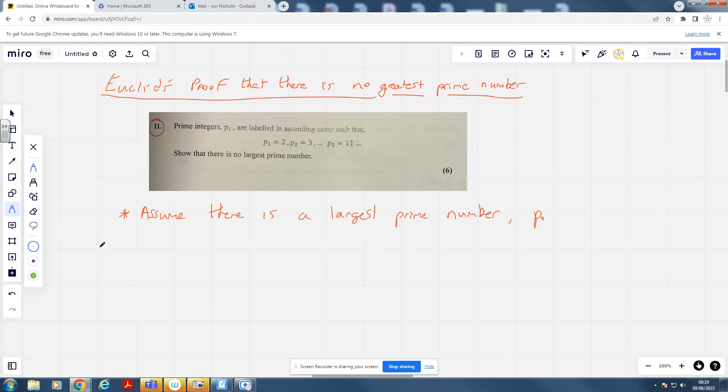And now, this was Euclid's great trick. He said consider a new number. Let's call this our number X. X is going to be equal to P1 times P2 times P3 times P4 times P5 times P6, all the way up to our largest number P_n, plus 1. So we're creating this new number by multiplying all of the primes together from the very first one, 2, all the way up to our largest prime number P_n, and then we're adding 1 to that.